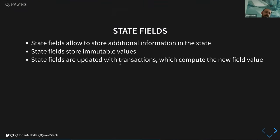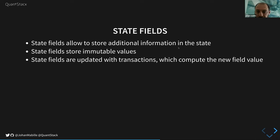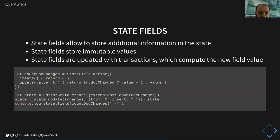Now we talk about state fields, which are another source of extensions used to store additional information in the state. For instance, when you start the debugger you want to store the breakpoints — they will be stored in a state field. Like the rest of the state, state fields store immutable values and are updated with transactions. A state field provides two methods: an initialization method and an update method. The update method takes the current value of the field and a transaction object and returns the new value of the field based on the transaction.